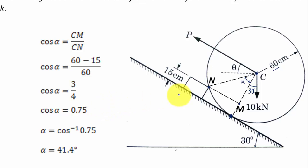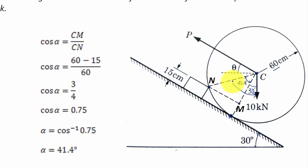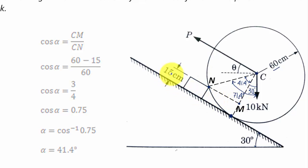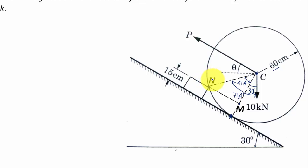With alpha equal to 41.4 degrees, the overall angle that line NC makes with the vertical is 41.4 plus 30 degrees, which equals 71.4 degrees.